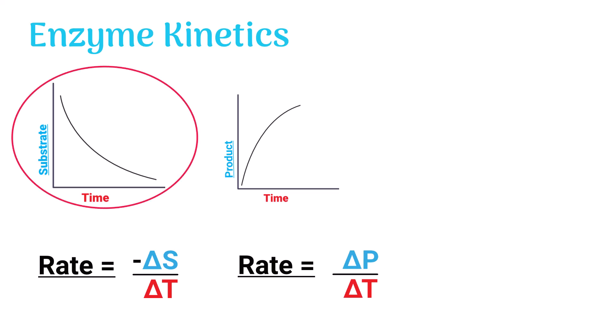As the amount of substrate is decreasing in the reaction, we will take the negative value of the substrate concentration, but the amount of product is increasing in the reaction, so we take its positive value.